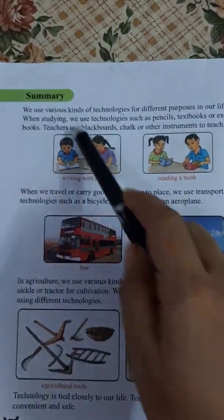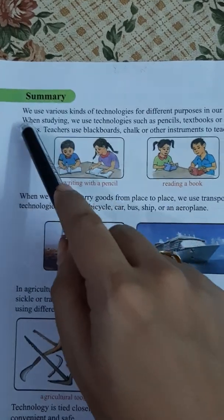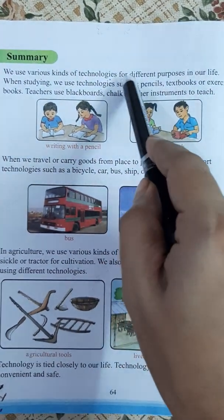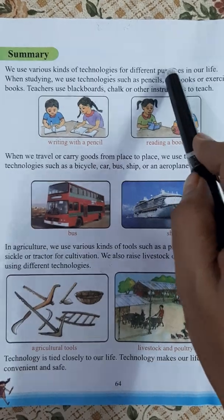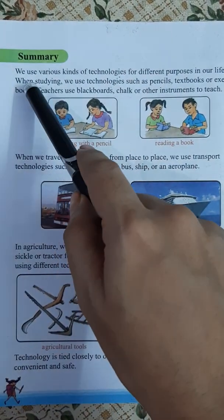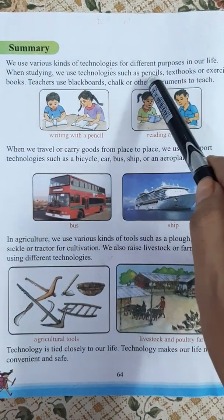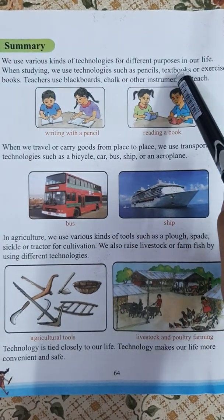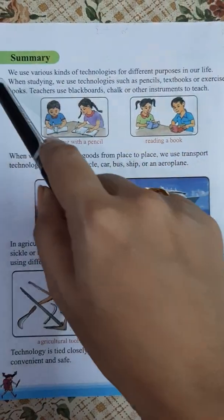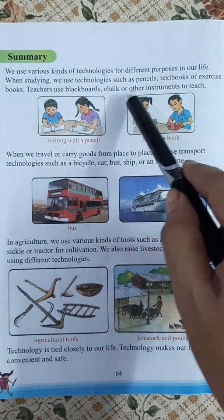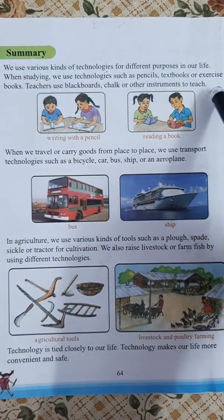Come to page number 64. Summary: we use various kinds of technologies for different purposes in our life. When studying, we use technologies such as pencil, textbooks or exercise books. Teachers use blackboards, chalk or other instruments to teach.